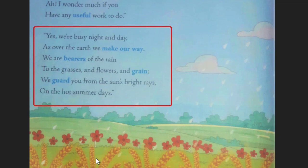Now let us understand what the second stanza is saying. The cloud says it is very busy as it travels over the earth all the time. It carries rain and gives it to the little grasses, to the flowers, and also to the grains. The rainwater is very essential for all of us and for nature — clouds carry the raindrops and help grasses, flowers, and grains to grow properly.